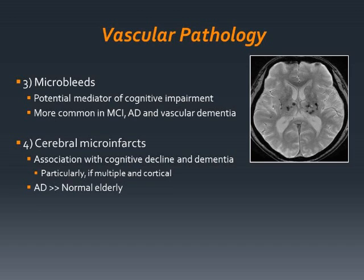Microbleeds have drawn research attention as a potential mediator of cognitive impairments, as they are more commonly found in patients with mild cognitive impairment, Alzheimer's disease, and vascular dementia. Emerging evidence shows that cerebral microinfarcts are associated with cognitive decline and dementia, particularly if they are multiple and cortical. Moreover, cerebral microinfarcts can occur in cognitively normal people, but the prevalence is higher in Alzheimer's disease.